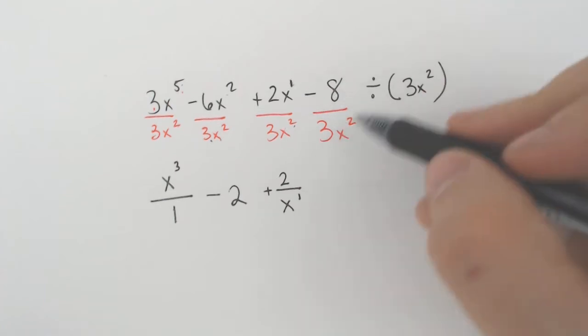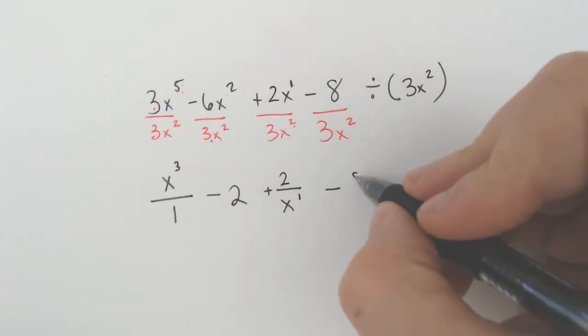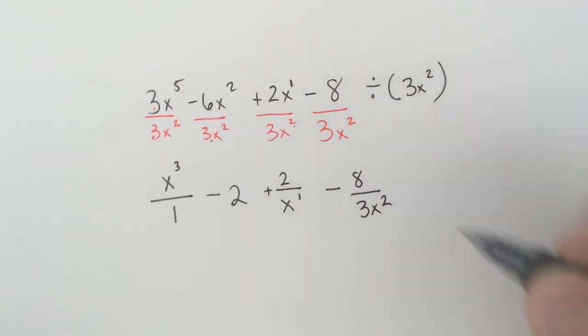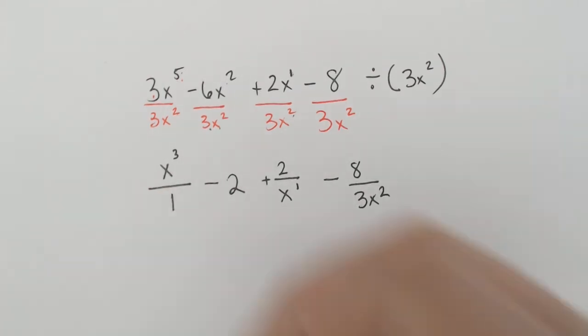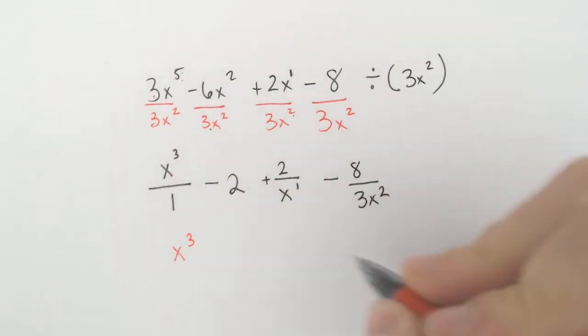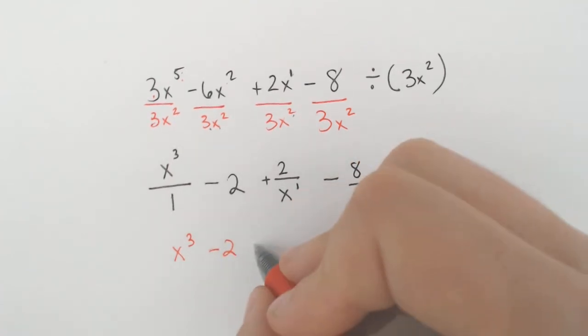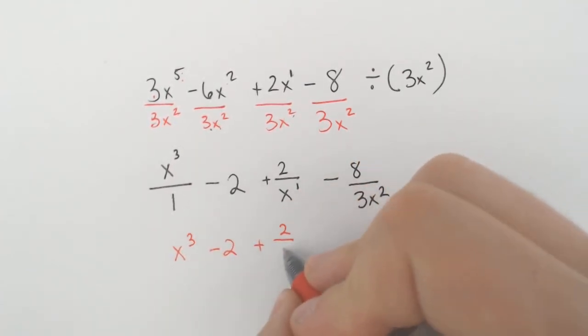And then sometimes you'll have something that happens here is where nothing really divides. You can't divide 8 by 3, and x squared didn't have any buddies to cancel out. So it ends up being this,